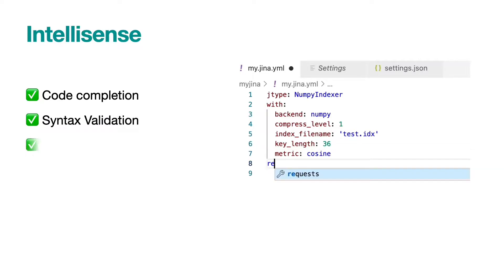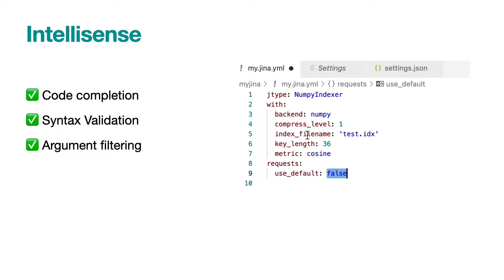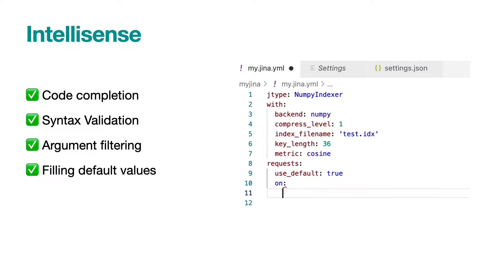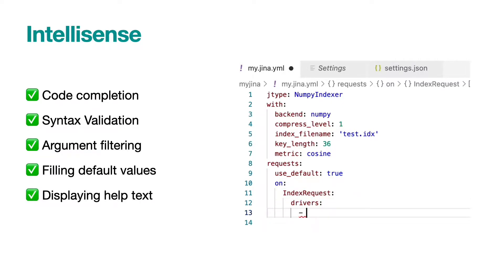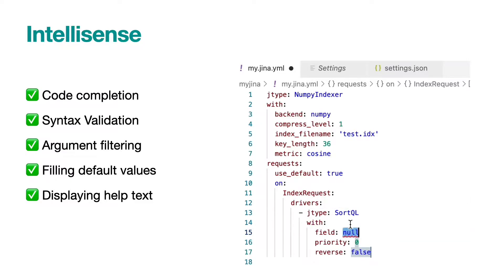IntelliSense can provide code completion, showing member and argument lists, and validating your YAML config. Those features can help you build your GINA application much faster.